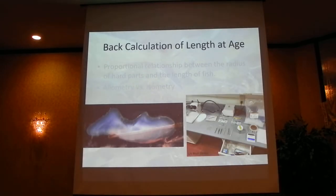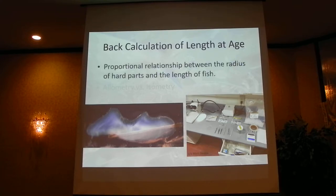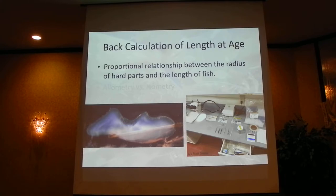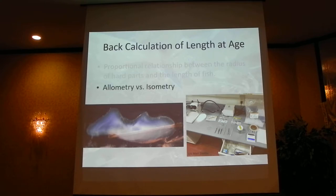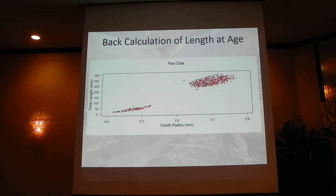To fill in that part of the curve we use back-calculation methods of length at age. Back-calculation assumes a proportional relationship between the otolith radius and the total length of a fish — hard parts like scales work too. Knowing the radius at capture and the total length, we can measure out to each annulus and back-calculate total length. We also need to assess whether we're dealing with isometric growth — a one-to-one linear relationship — or allometric growth, which is a deviation from that one-to-one trend, either positive or negative.